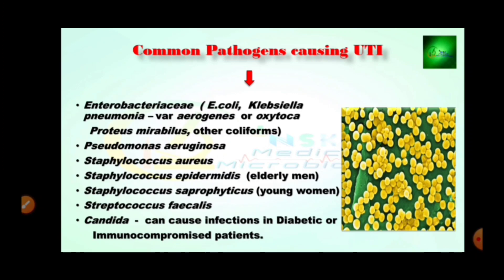Staphylococcus epidermidis is present in elderly men, and Staphylococcus saprophyticus is present in young women. Staphylococcus faecalis and Candida can cause infection in diabetic or immunocompromised patients — meaning patients who have other types of diseases and are also infected with other types of infections such as AIDS, HIV, and Mycobacterium tuberculosis (TB).